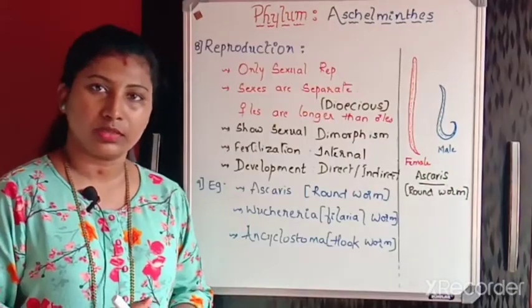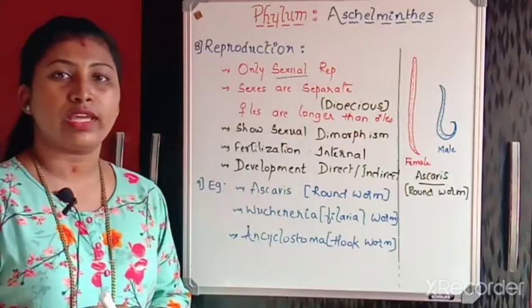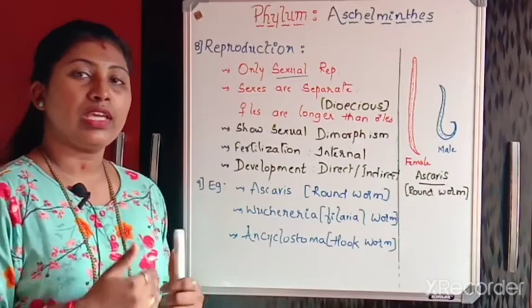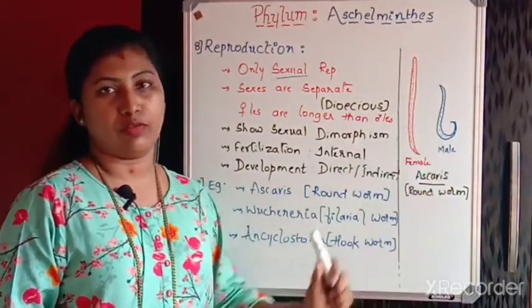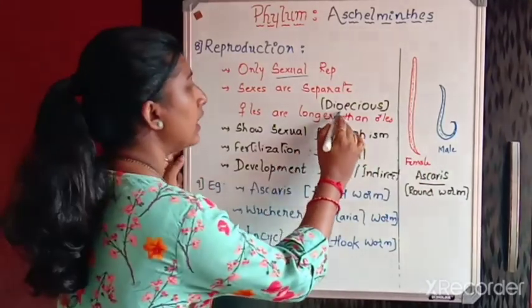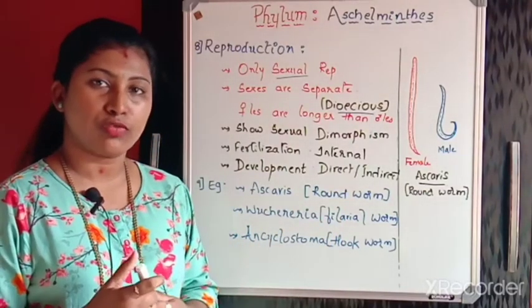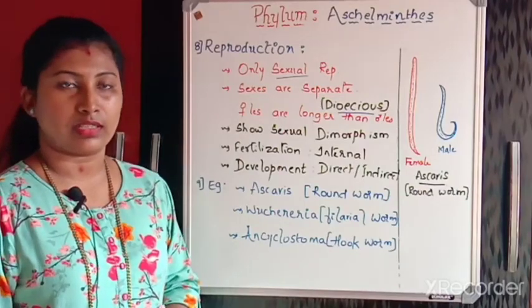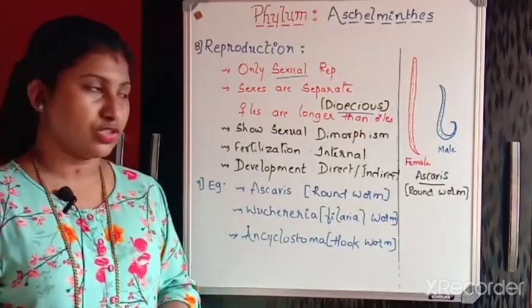Next, regarding reproduction: only sexual reproduction takes place here; there is no asexual reproduction. Sexes are separate, meaning we can easily distinguish between the male worm and the female worm. Hence they are called dioecious animals. If sexes are not separate it would be called hermaphrodite or monoecious, but here since sexes are separate they are dioecious.